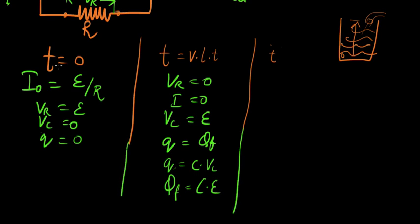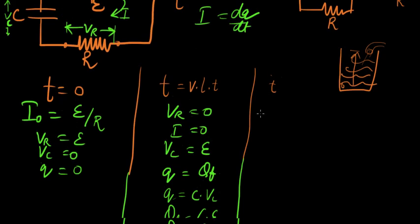All this is fine. The initial condition, the final condition. But we need to derive equations to support. Suppose somebody comes and asks you okay, at five seconds what is the kind of charge we have inside the circuit, what is the kind of current we have inside the circuit.